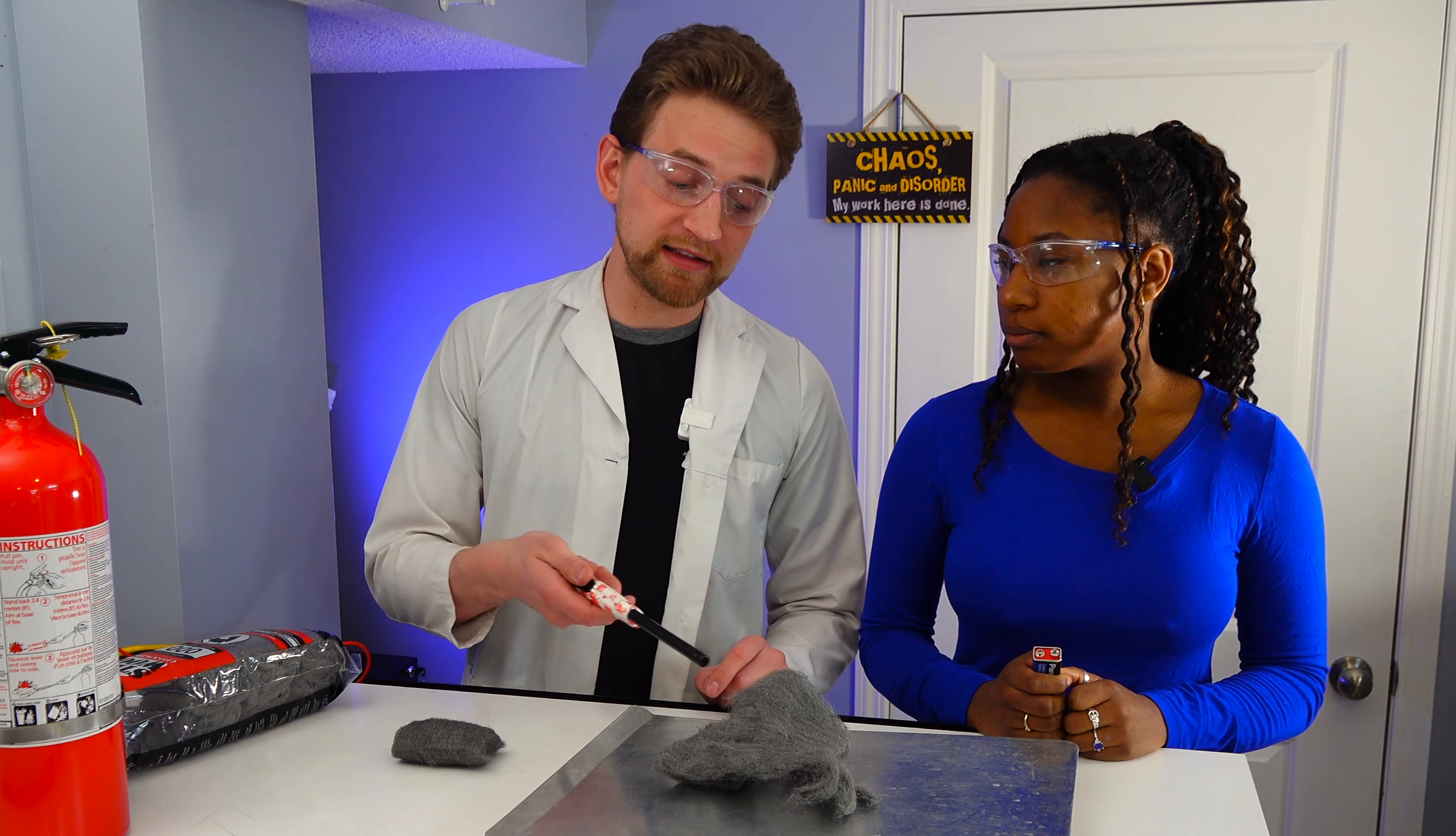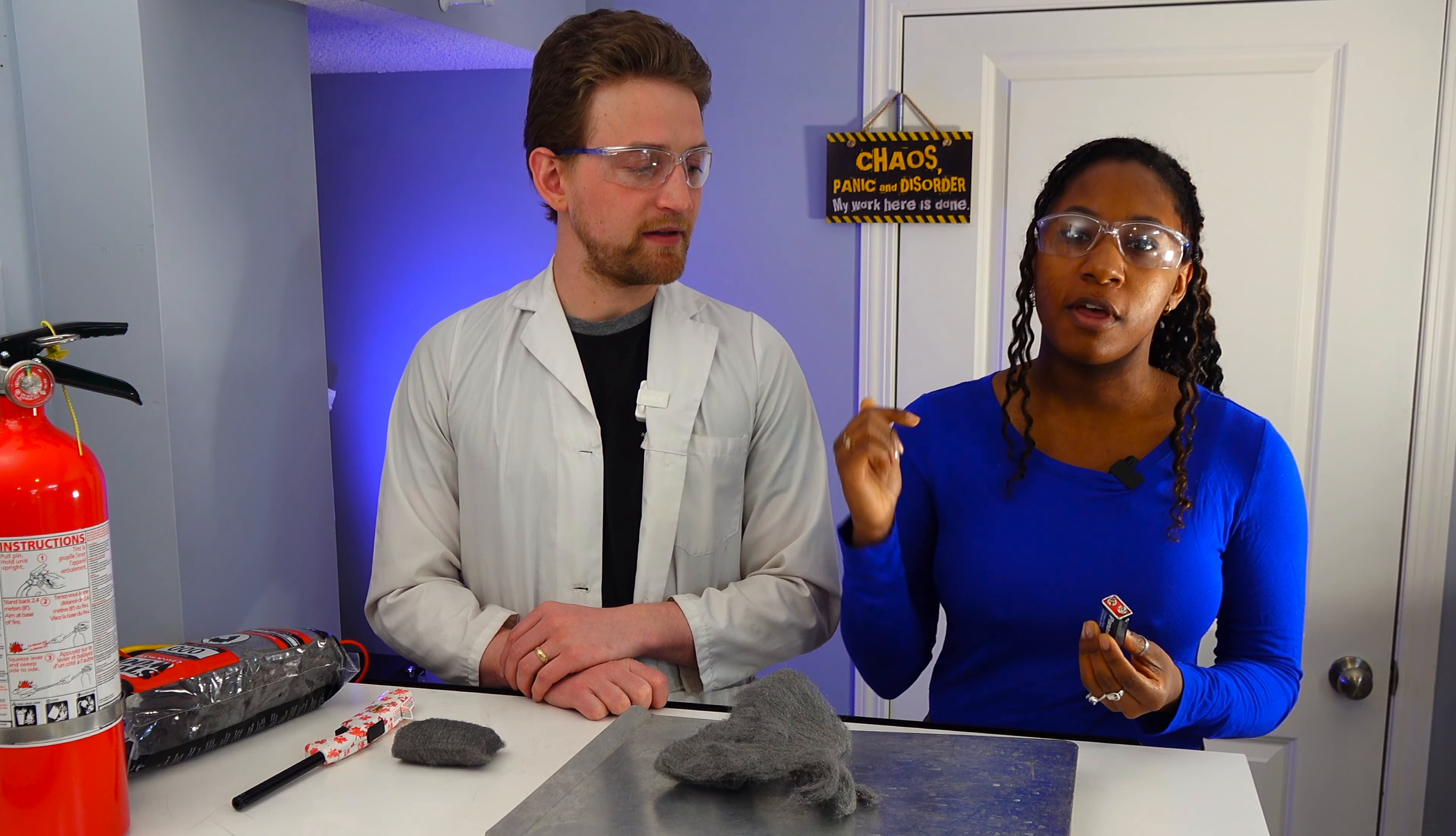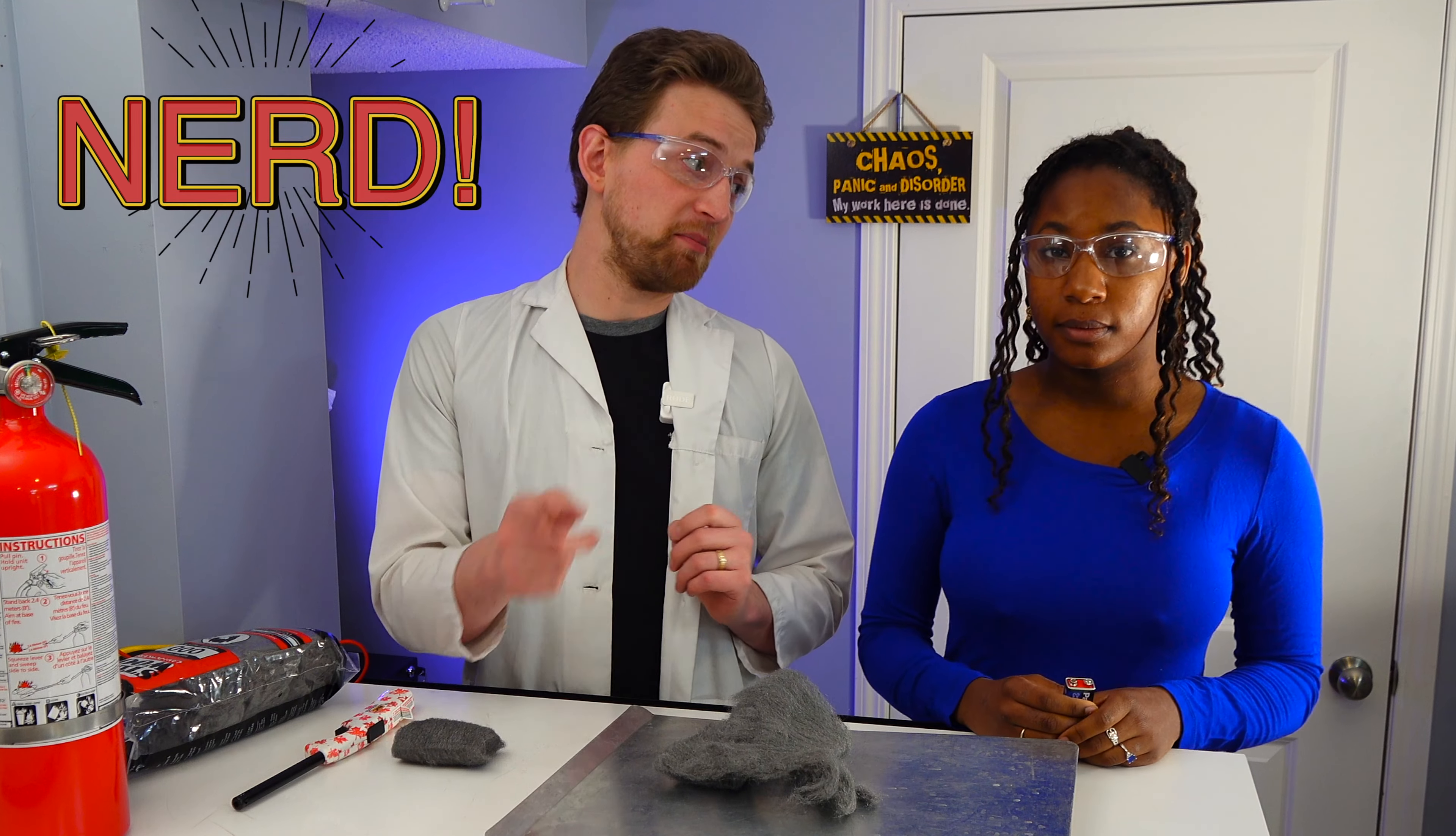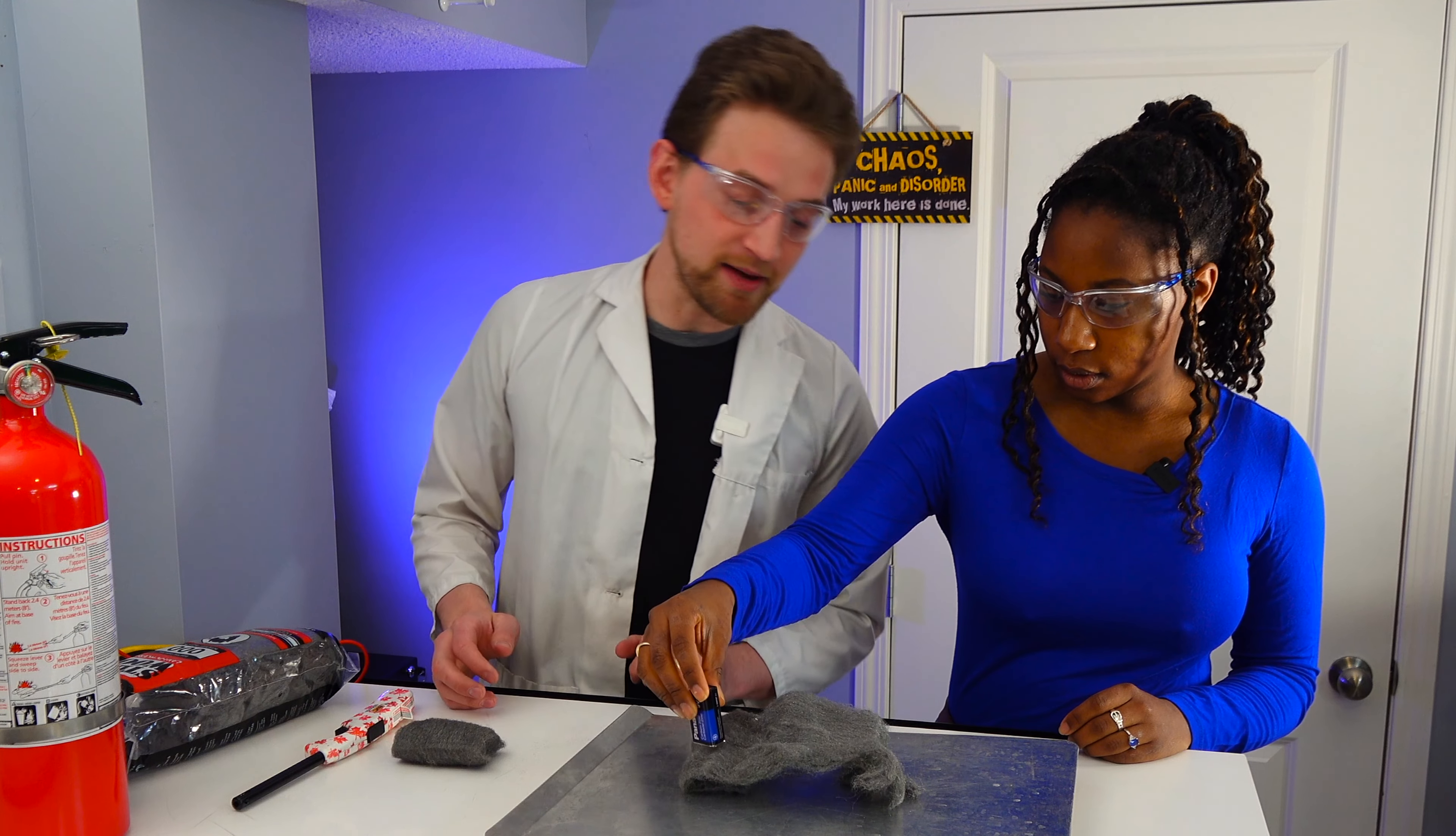Now, we could just use a lighter and light it on fire, but it actually works a lot better if you use a 9-volt battery. Now, steel wool is very conductive. This allows the electrons to move from the positive to the negative. Yes, but steel wool is also a high resistor, so as the electrons are flowing from the negative to the positive, actually because they're backwards, it warms up and it actually heats the steel wool up to over 700 degrees Celsius. So let's try it. Go ahead and touch the battery to it, and we'll see what happens.